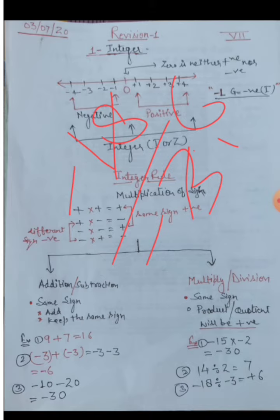Because when the signs are the same, the product and quotient will always be positive.